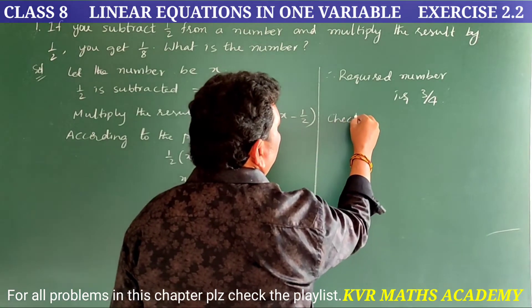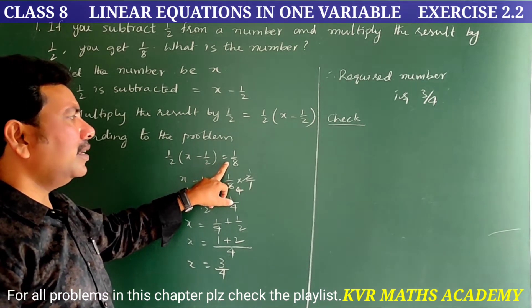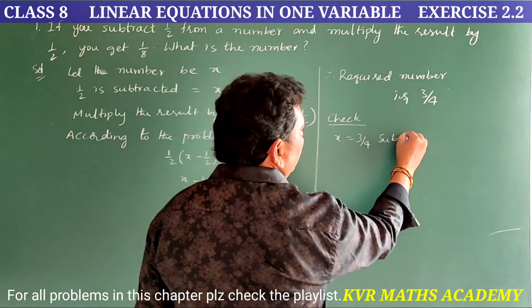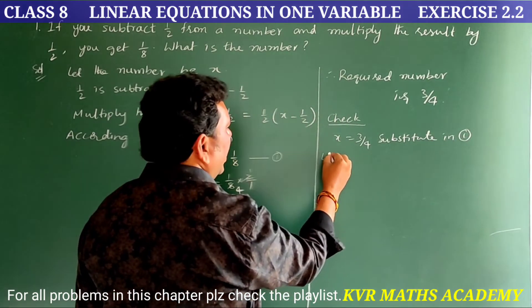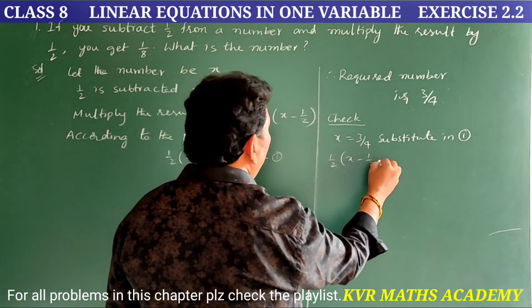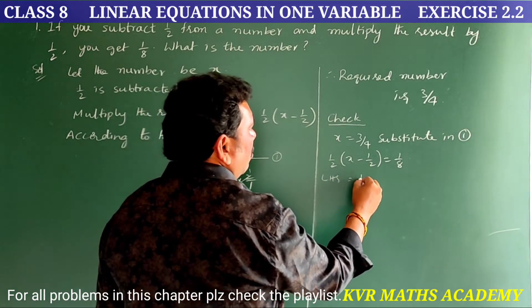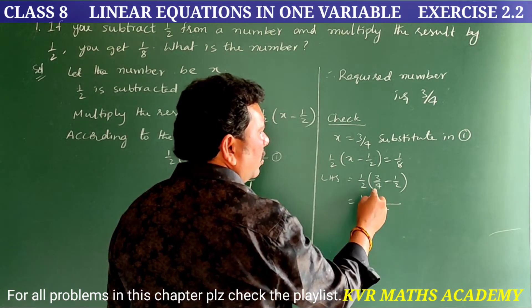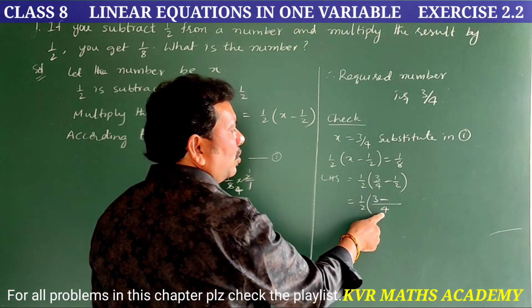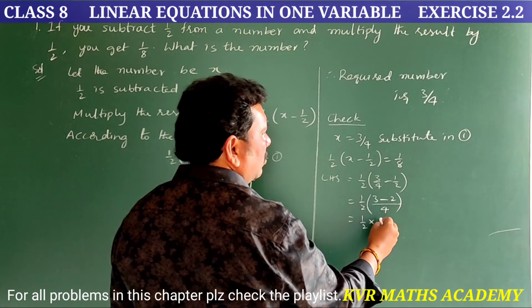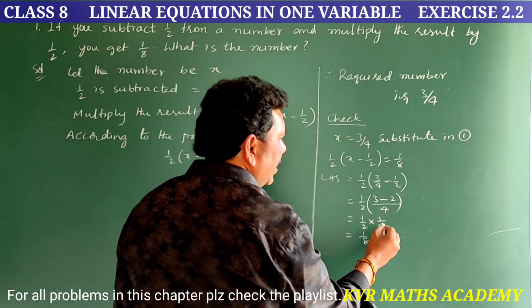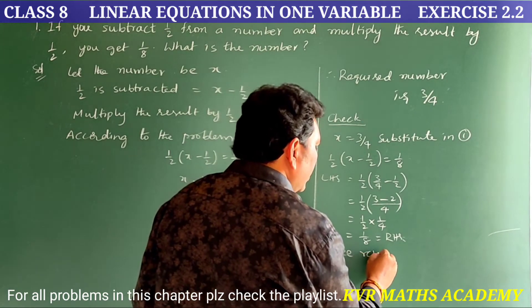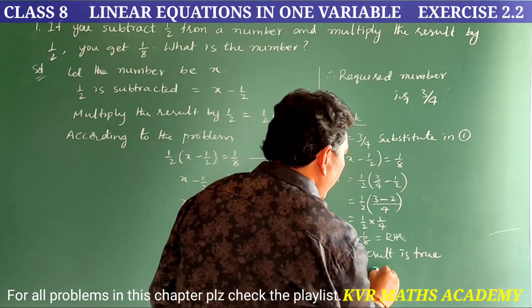Let us check whether this is the correct solution. We need to verify that 1/2 × (x − 1/2) = 1/8. Substituting x = 3/4 into the LHS: 1/2 × (3/4 − 1/2). LCM of 4 and 2 is 4, giving 1/2 × (3/4 − 2/4) = 1/2 × (1/4) = 1/8, which equals the RHS. Hence the result is true for x = 3/4.